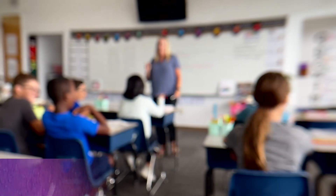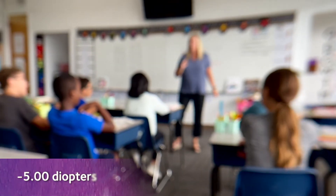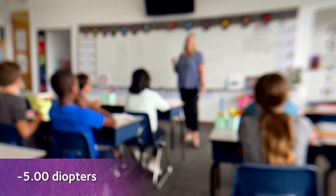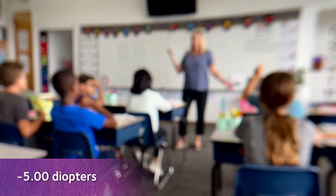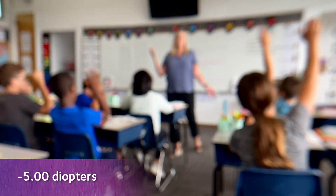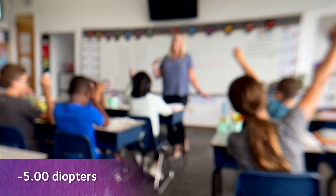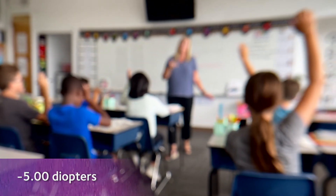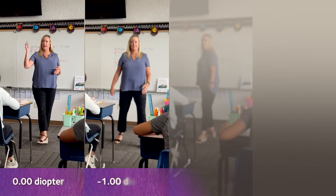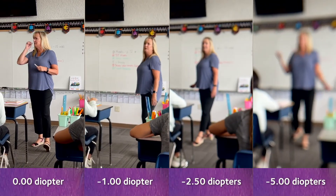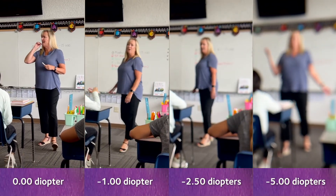If we change to minus five diopters, the effects of myopia are much more profound. Look at the whiteboard — all objects in the distance are now a complete blur. To recap, here's a side-by-side look at the classroom comparing the various levels of myopia.